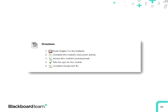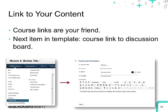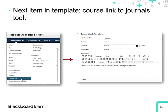Now that we have student directions, it's time to send students to their content using course links. Course links take you from one point in your course to another, which is helpful when we want tool-based content in convenient consolidated areas. The next item in my module template is a course link to the discussion board area. Clicking this link is equivalent to clicking Discussion Board in the course menu, but by having the course link in the content area, everything is presented literally for the students. This course link is generic enough that I won't have to change it for any module.